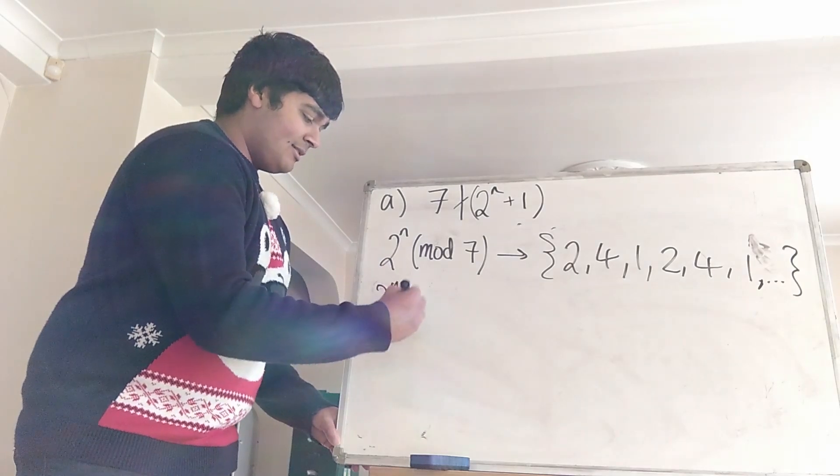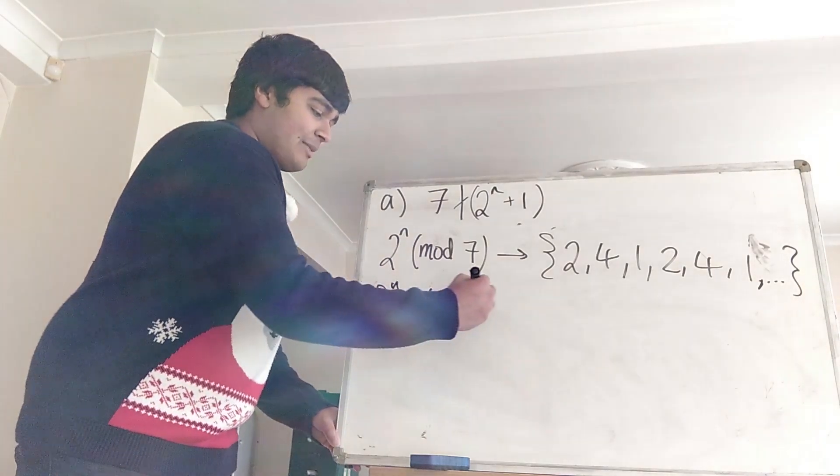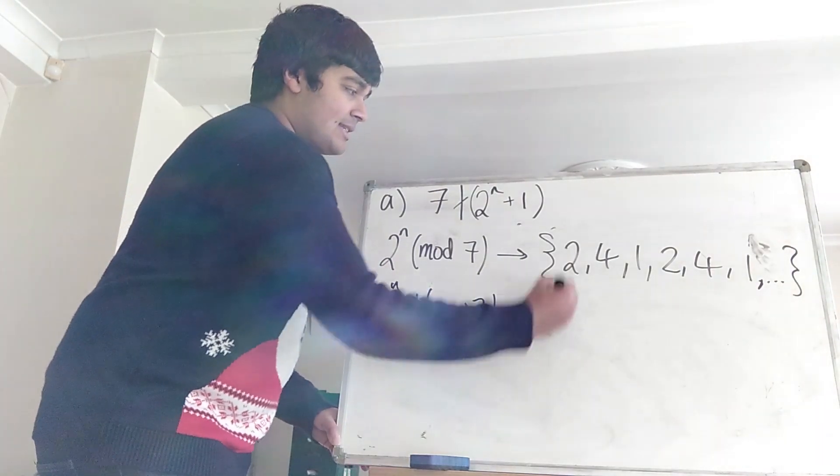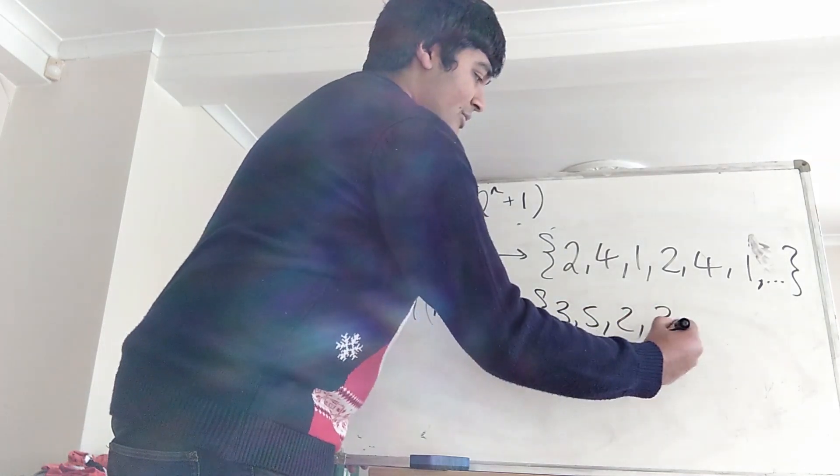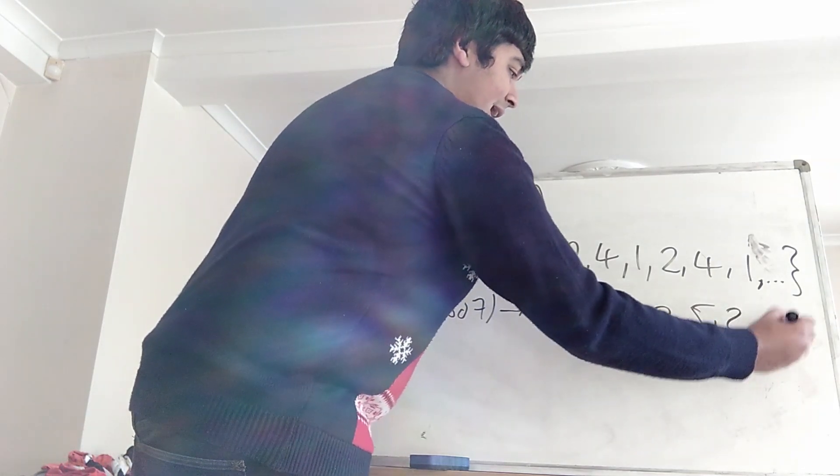So then of course 2 to the n plus 1, very similar to what we did before. So we're adding 1 to each term now. Now this is going to give us 3, 5, 2, 3, 5, 2 and so on.